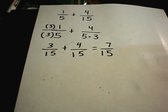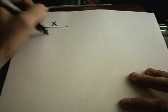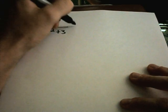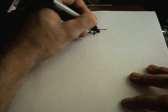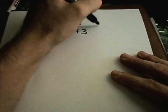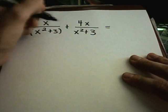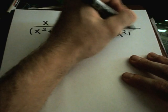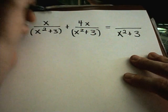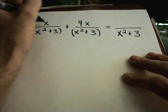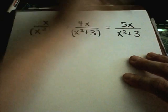The idea is the same when you have more complicated expressions. Suppose I have x over x squared plus 3, and I'm going to add to that 4x over x squared plus 3. I have a common denominator. I see the exact same thing, x squared plus 3. In the denominator, you'll get just x squared plus 3. You don't do anything there. Then I add my terms. I have 1x plus 4x, I will get 5x.